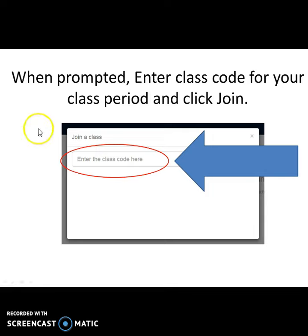Once you type in your class code it'll confirm whatever class period you're in here and then it'll pop up with join. So if it is the correct class period then you click join. If it's not the correct class period you got to go back and look and get the correct class code. So where do you find the class code?